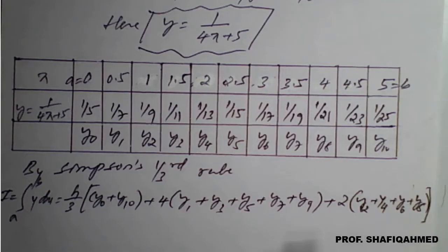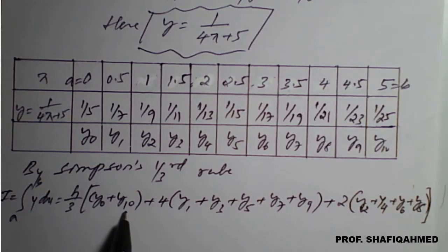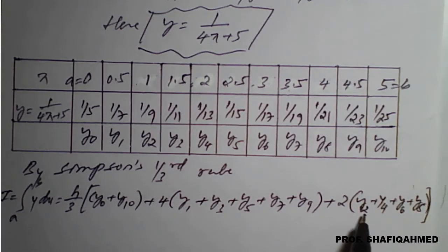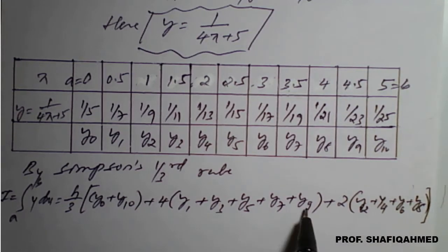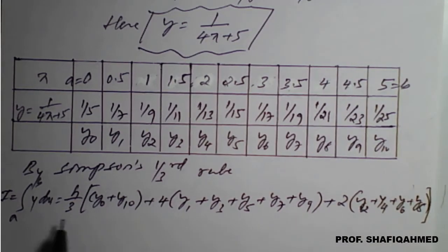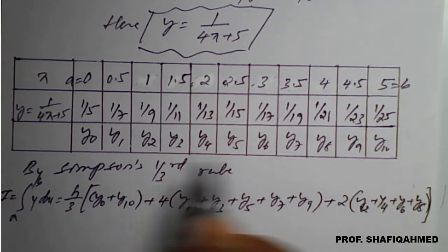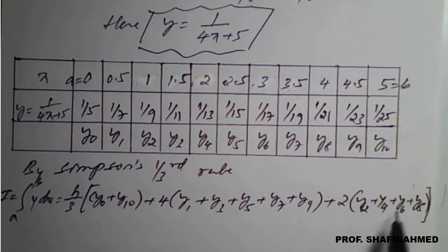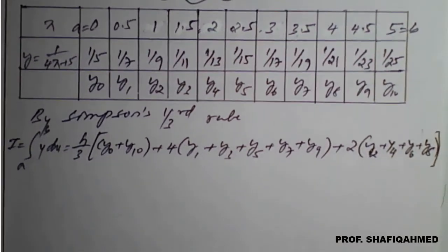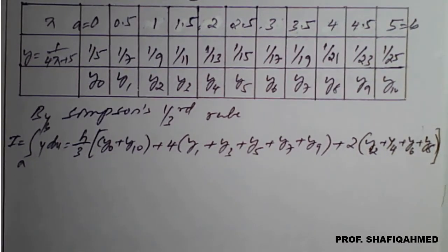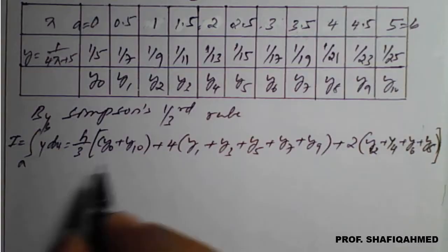y8 and y10 will come. y10 already, so if you count it: y1, y2, y3, y4, y5, y6, y7, y8, y9, y10 — so all y0 to y10 are coming in the formula. Next we need to apply the values.